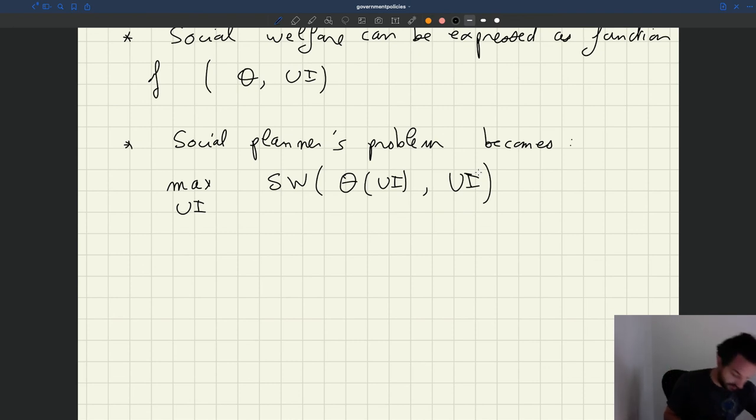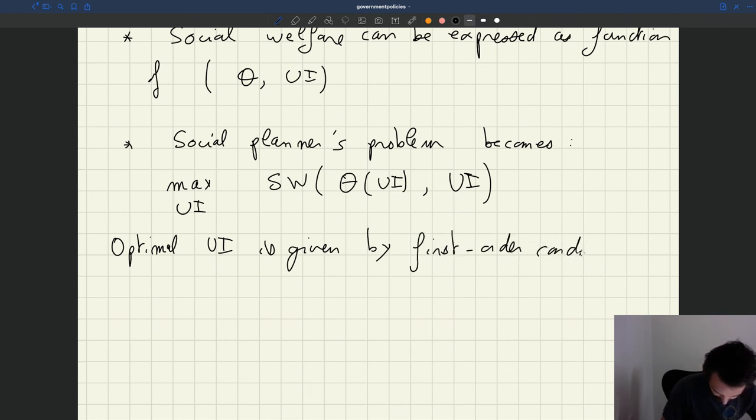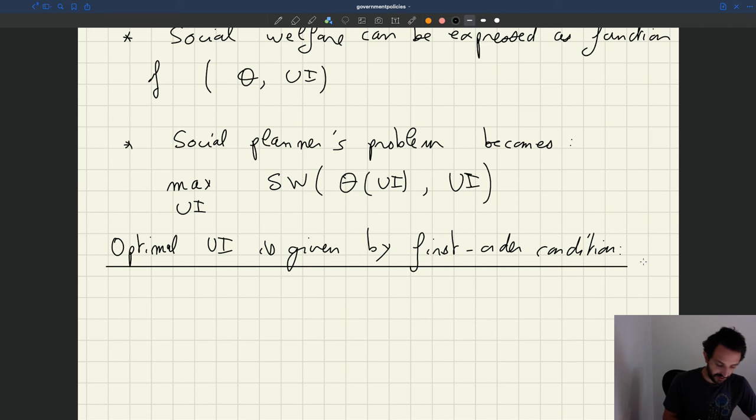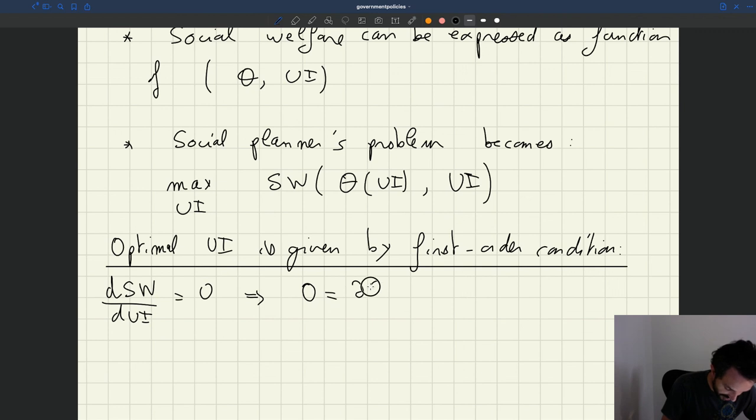That will give us the optimum, the best policy. So optimal value is going to be given by the first-order condition. It's a total derivative of social welfare with respect to UI has to be equal to zero. And that means that given that social welfare can be written as a function of tightness and UI,